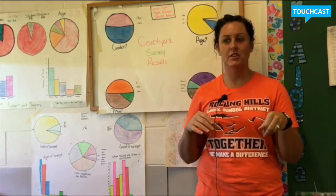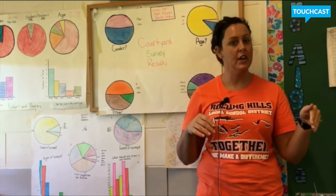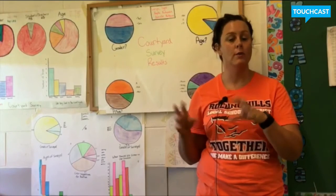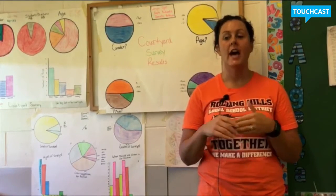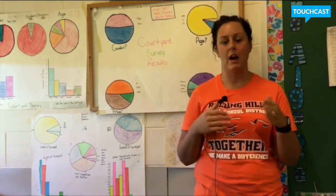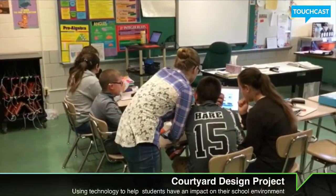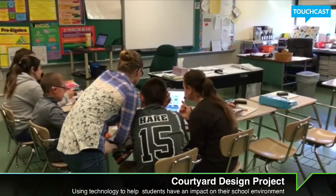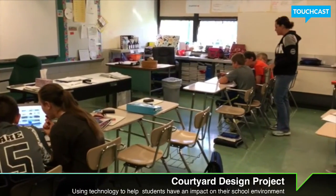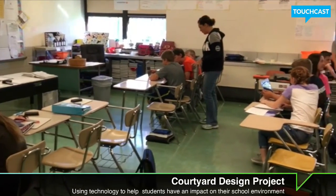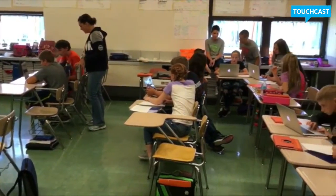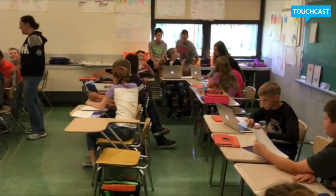The 7th graders surveyed other 7th graders and some adults using Google Forms. They sent a survey out to their friends, and then their friends told them what they wanted out there. Some knew they wanted a greenhouse, so they asked what sorts of things would you want in the greenhouse. Some knew that they wanted benches out there, so they asked how many do you want. So they used other people's input to make their design.